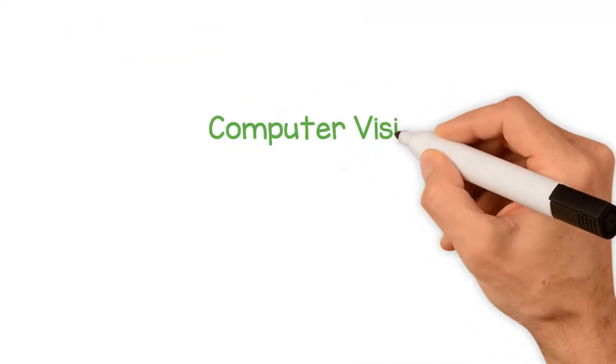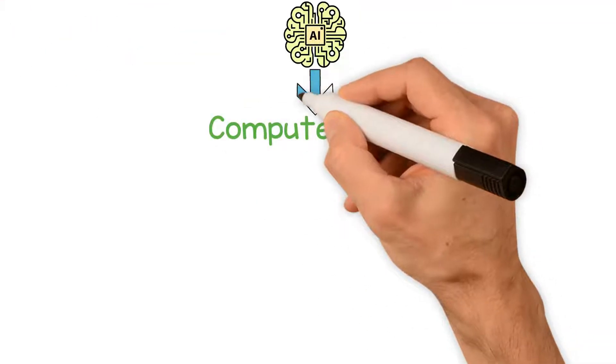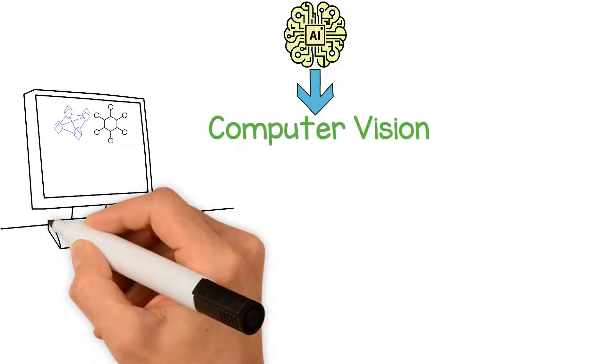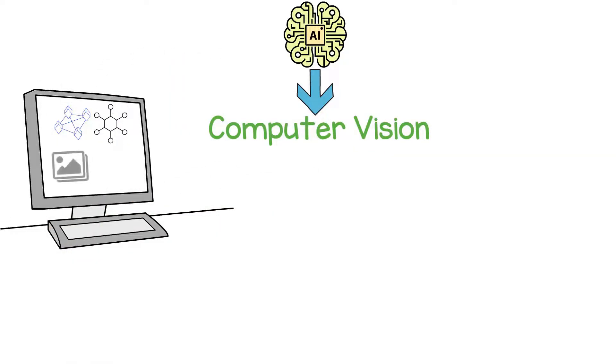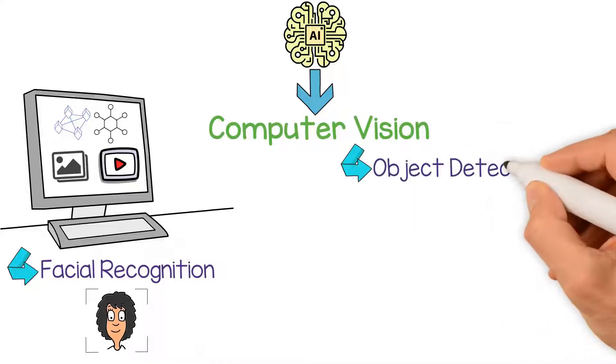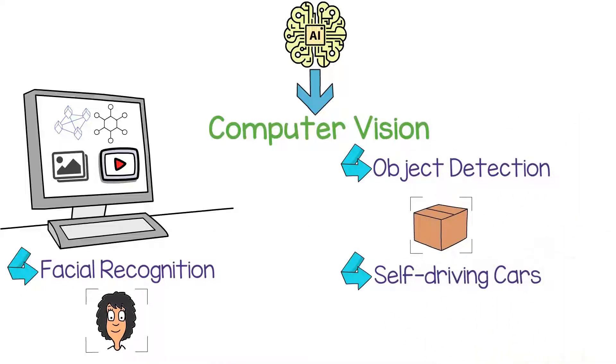Computer vision, as the name implies, is the subfield of AI that deals with the development of algorithms that enable computers to interpret and understand visual data such as images and videos. Computer vision is used in a wide range of applications such as facial recognition, object detection, and self-driving cars.